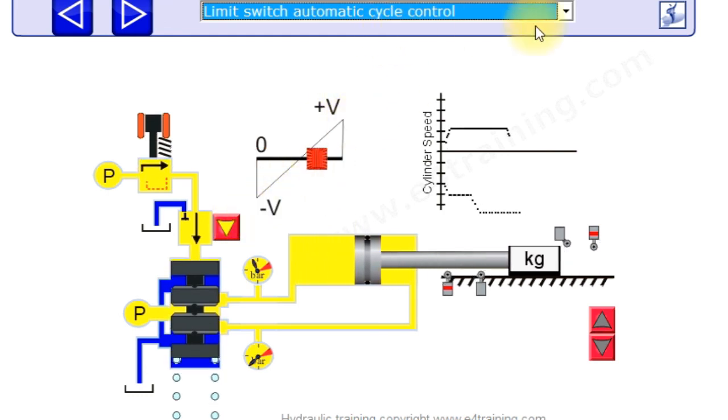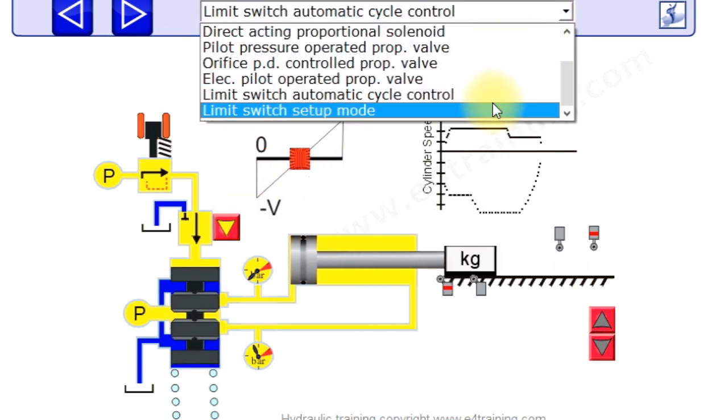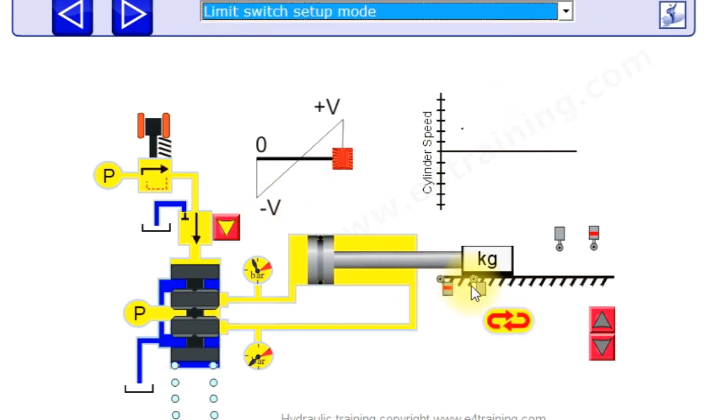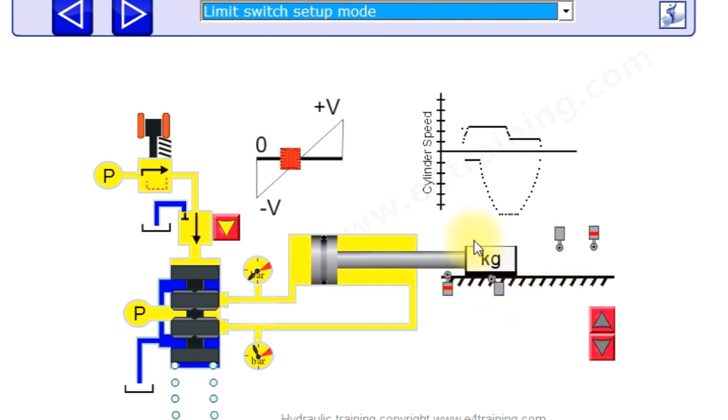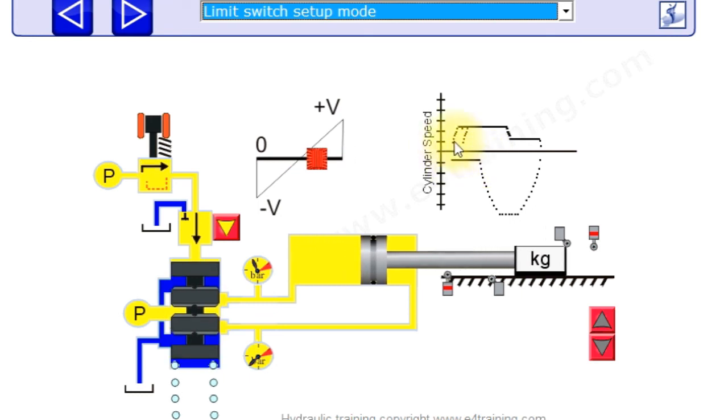We can also now change - you can have a little play on this - you can set your limit switches. So we can click on this one and we can change the value we give at this limit switch, change its position, and then when we run it now it creeps back for a lot further and a lot slower.